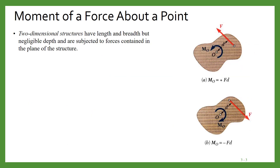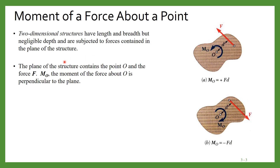Now consider two-dimensional structures. 2D structures are those that have length and breadth but negligible depth. Suppose this is a 2D structure, we have point O, and the force F is applied in the same plane. The moment of this force is MO, and by the right-hand rule the moment vector will be out of this plane.